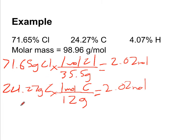And then the last one, hydrogen, 4.07. One mole of hydrogen has a mass of 1 gram. I forgot my grams up there. So that's going to give us 4.07 moles of hydrogen.